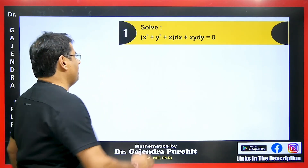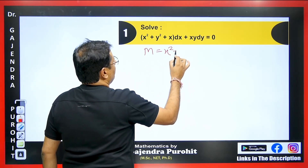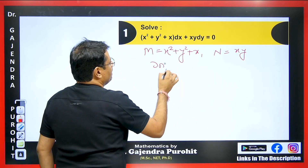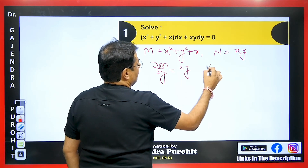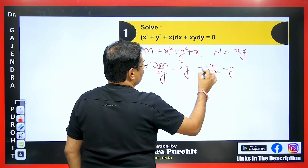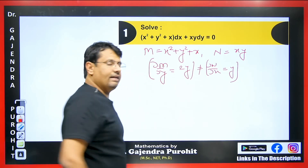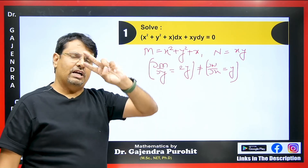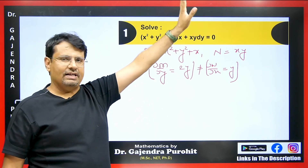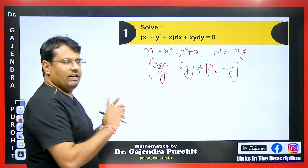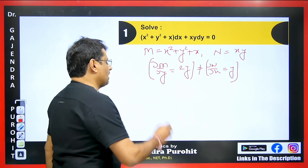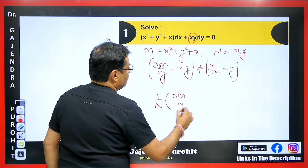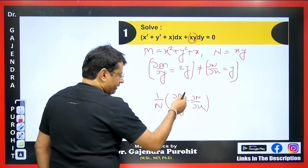Here is the question: M = x² + y² + x and N = xy. We check ∂M/∂y, which gives 2y, and ∂N/∂x, which gives y — these two are not equal, so the equation is not exact. We check: is it homogeneous? No. Can we take y or x common from here? No. So the two concepts I explained in the last video do not apply. We will now decide which of the two integrating factor formulas to use.